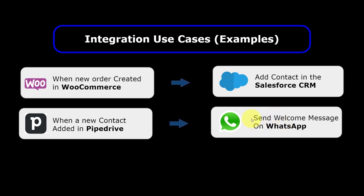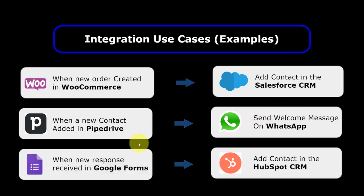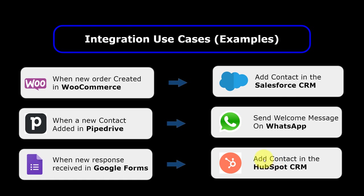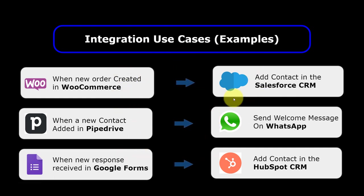Taking another example: assume a new contact has just been added in your Pipedrive CRM. You can automatically send a welcome message to that person on WhatsApp. And when a new response is received in your Google Forms, you can add the same person as a contact in HubSpot CRM. In this way, you can automate many complex business processes by simply building connections between different applications.